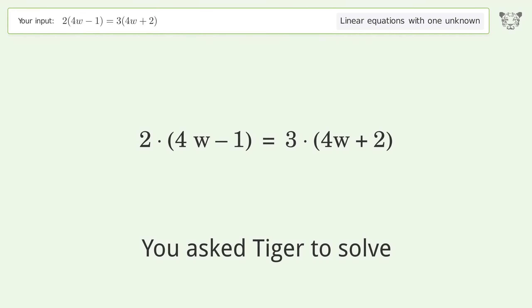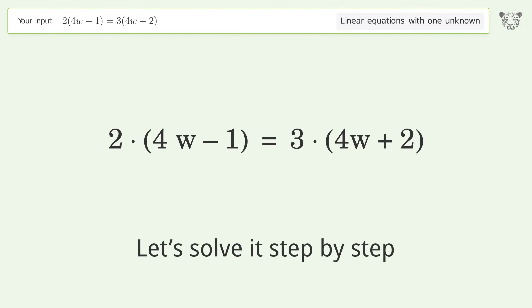You asked Tiger to solve this. It deals with linear equations with one unknown. The final result is w equals negative 2. Let's solve it step by step. Simplify the expression.